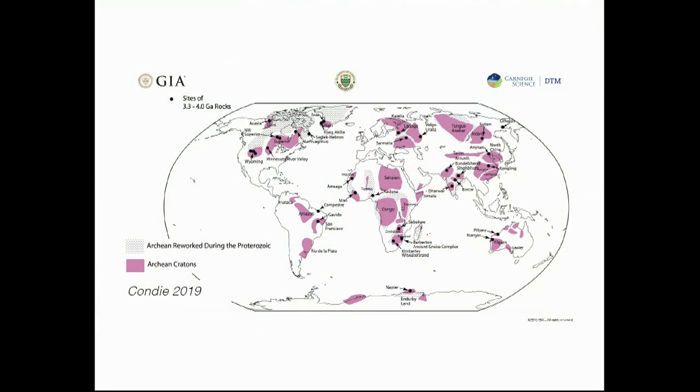Understanding how continents have maintained their long-term stability, and using diamonds to do that, is a very important factor in understanding whether other planets could perhaps be habitable. What I'm showing here is just a map showing all the oldest continents on Earth — continents that have been stable for more than 2.5 billion years, known as cratons.